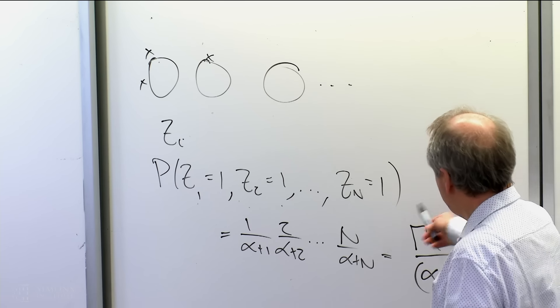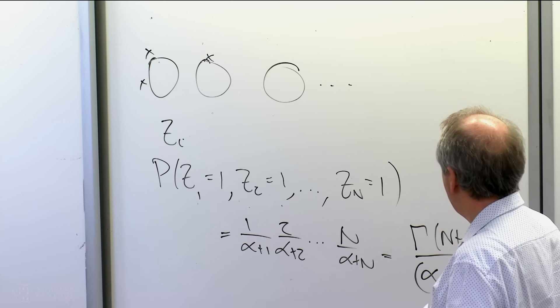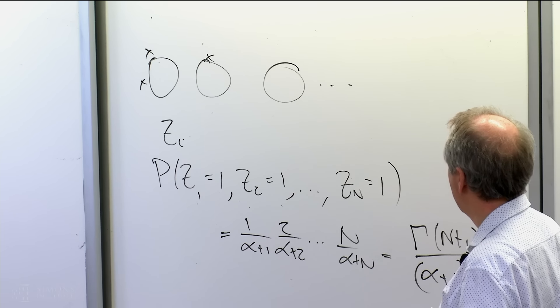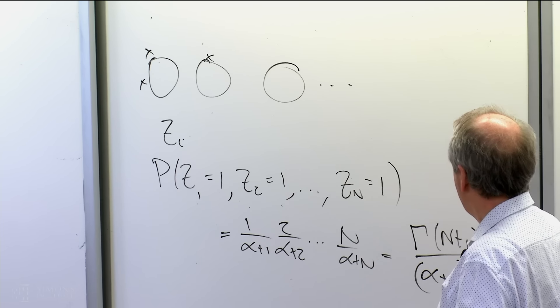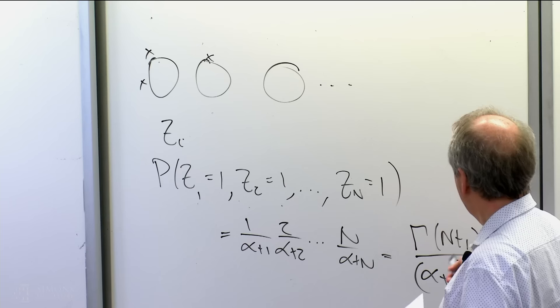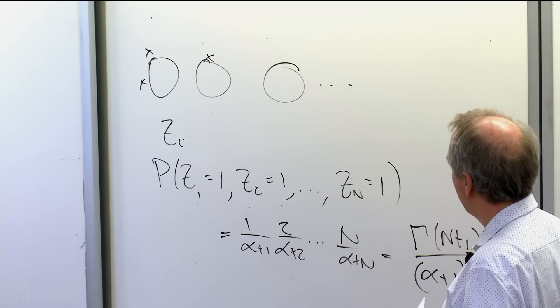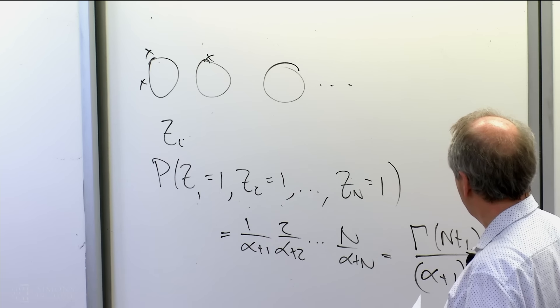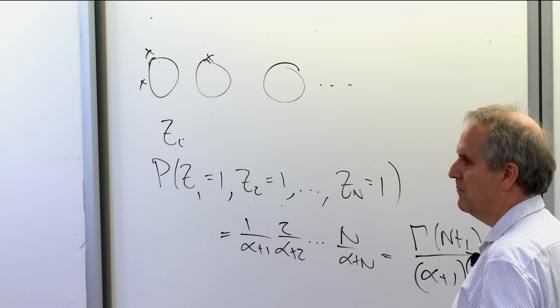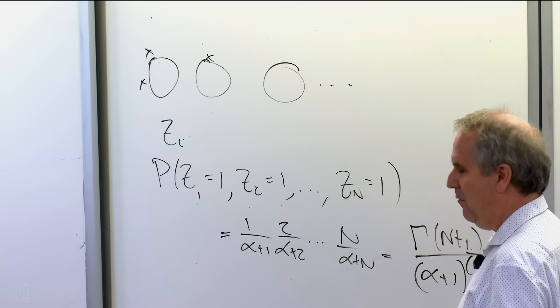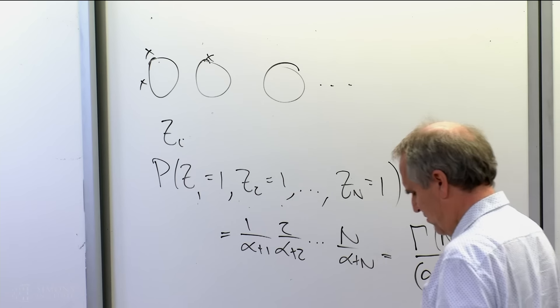So you look at that object and say, well, as a function of n, I'm getting some distribution here — that kind of looks like a moment. It looks like a moment of some kind. So what moments are those?